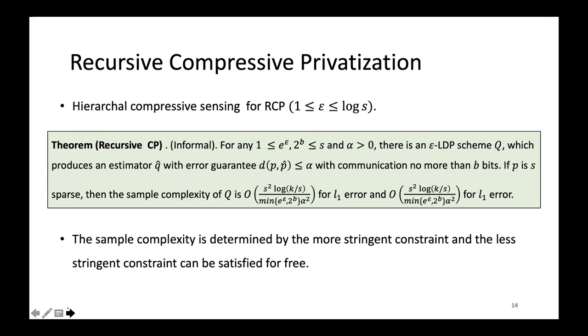We also extend compressive privatization to medium privacy regime, where epsilon is larger than one, but less than log s. For medium privacy, the relationship between sample complexity, privacy, and the communication costs becomes more complicated. The high-level idea of our CP is to use an RIP matrix for privatization and model the estimation as a sparse recovery problem. However, only using a standard CS technique like before cannot achieve the optimal result in this regime. Thus, we use a more complicated compressive sensing technique called hierarchical compressive sensing to balance privacy and communication constraints. And the result is summarized as follows. An interesting thing we find is that for medium privacy, the sample complexity is determined by the most stringent constraint and the less stringent constraint can be satisfied for free.